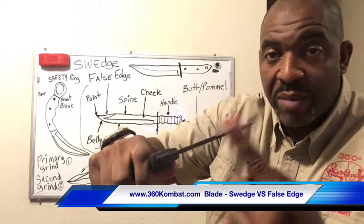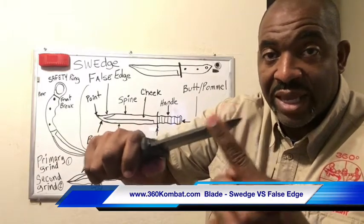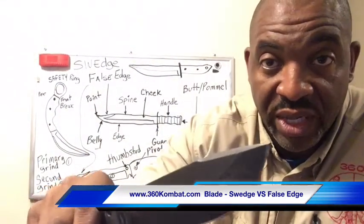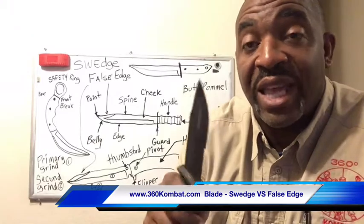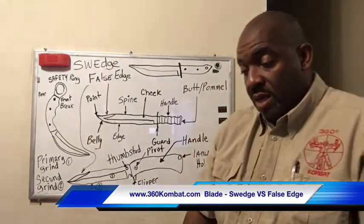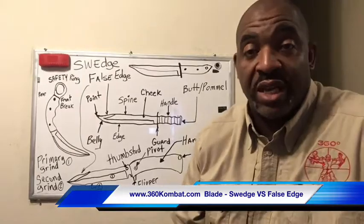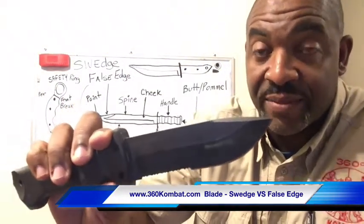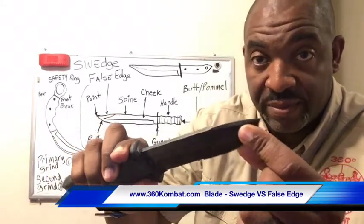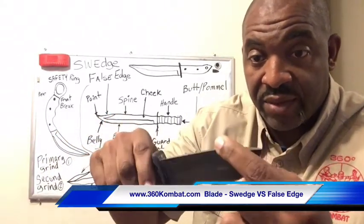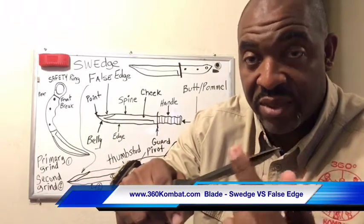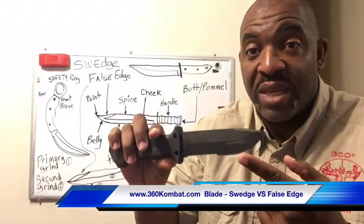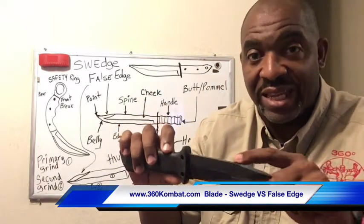I can't cut myself on that part — that's why it's considered a swedge versus a false edge. The false edge would be considered if I took this and it was sharpened. If this was sharpened, I can cut myself with it. This is the primary edge; this would be the false edge.